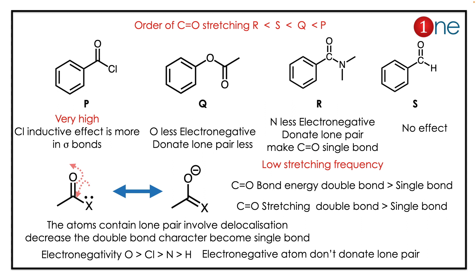If you look at R, it has an amine nitrogen which is least electronegative, so it donates electrons and weakens the C=O bond, giving it the lowest stretching frequency. Then there is competition between S and Q. Q has an electronegative oxygen, so it donates less than nitrogen, giving Q a higher stretching frequency than S.